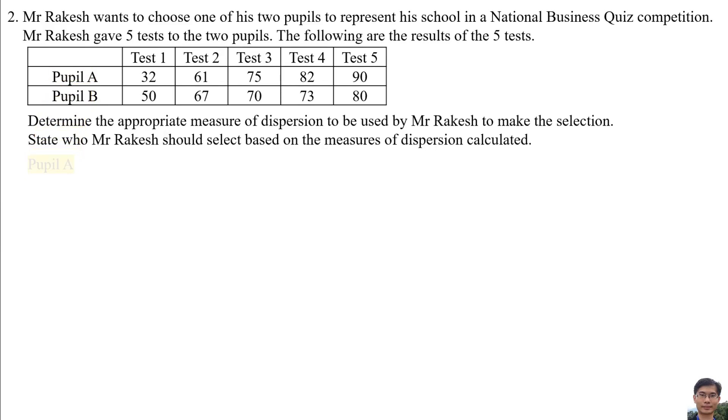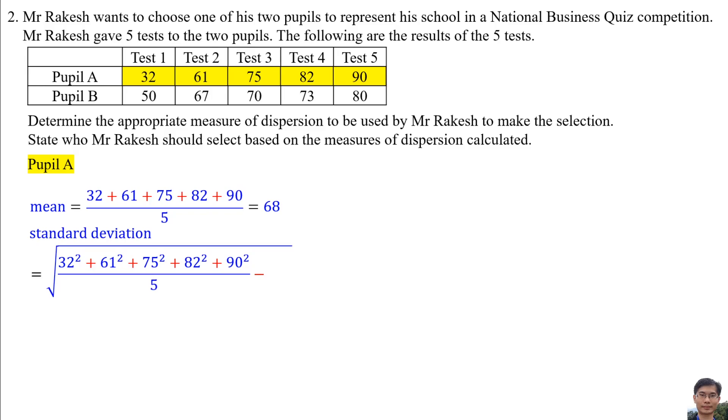Firstly, we find the mean for Pupil A. Mean is equal to the average score of all 5 tests. So the mean is equal to 68. Then we find the standard deviation. We square all the scores and divide by 5, minus the mean. Make sure the mean is squared. And so standard deviation is 20.37.